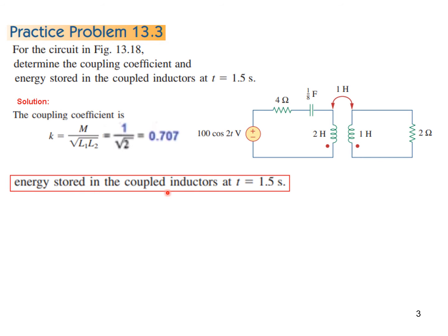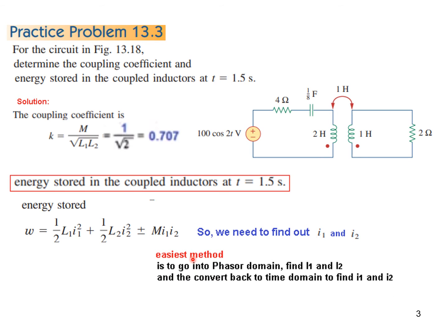Next question is energy stored in the coupled inductor at t equals 1.5 seconds. So we have to use this formula, and to use this formula we have to first of all know the value of the current I1 and I2. The easiest method is to go to the phasor domain to find I1 and I2, and then convert back to find the time domain current. So we will follow that technique.